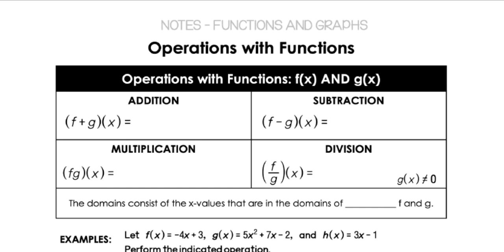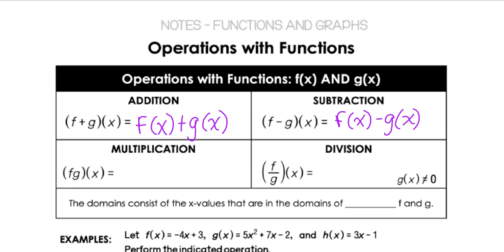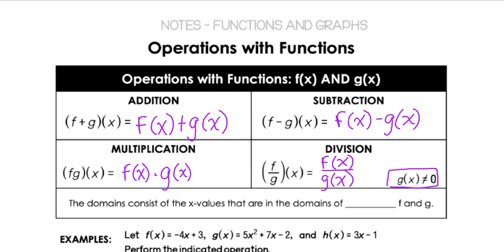The first operation we can do is addition. We can write it as (f + g)(x), which is the same as f(x) plus g(x). We can also do subtraction: f(x) minus g(x). We can do multiplication: f(x) times g(x). And then division: f(x) over g(x). One thing to remember with division is we can't divide by 0, so g(x) cannot equal 0. That is a restriction we need to keep in mind.